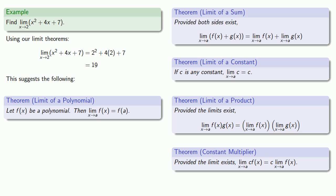Let f of x be a polynomial. Then the limit as x approaches a of f of x is f of a itself.